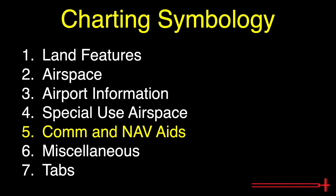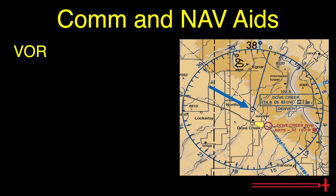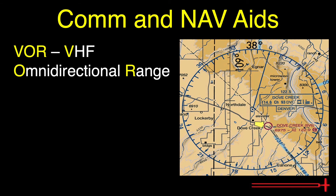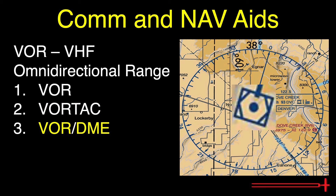Up next we have communication and NAV aids, covering several acronyms: VORs, FSS, RCOs, and NDBs. VORs, or very high frequency omnidirectional range stations, are depicted inside compass roses found all over the charts. VORs fall under three categories: normal VORs; VORTACs, which are VOR stations with TACAN capability used by the military; and VOR DMEs, or VORs with distance measuring equipment capabilities.